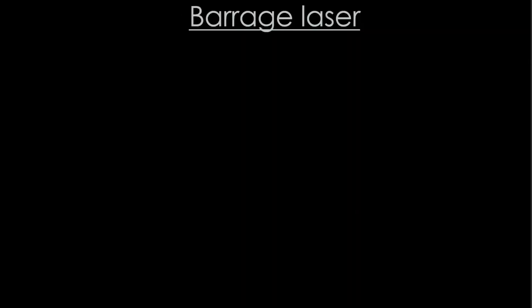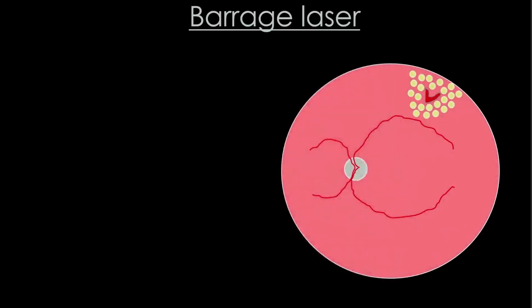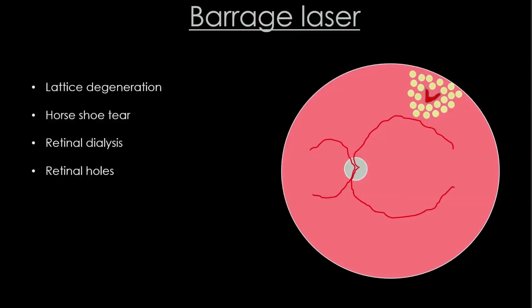Barrage laser is the creation of a barrier around a peripheral retinal degeneration to limit or prevent the accumulation of subretinal fluid. Common indications include lattice degeneration, horseshoe tear, retinal dialysis, and retinal holes. Laser marks are placed in two to three rows around the lesion, half a burn width apart.